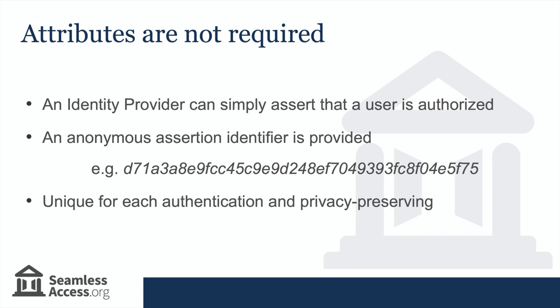Attribute release is not required as part of federated authentication. An identity provider can simply assert that a user is an authorized member of their organization and do nothing more. In this case, the identity provider would provide an anonymous assertion identifier that would be associated by the service provider with this authentication response. You can see an example of one in the slide. As this identifier is uniquely generated for each authentication and contains no personally identifiable information, it ensures that user privacy is preserved.